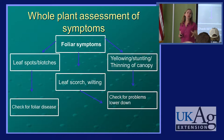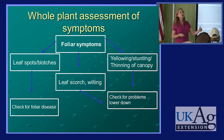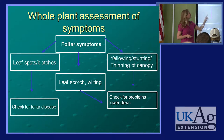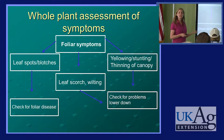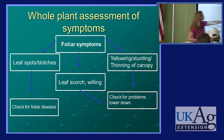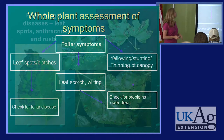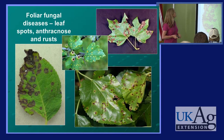If we see things that are a little less specific, such as marginal burn, scorching, or wilting, we're going to look somewhere else on the plant and check for problems lower down. If we see yellowing, stunting, or thinning of a canopy, that's going to lead us to problems lower down — problems that have to do with the environment, the planting site, and things like that. So let's start with foliar diseases first. There's a huge variety of foliar fungal diseases, and some bacterial diseases as well.